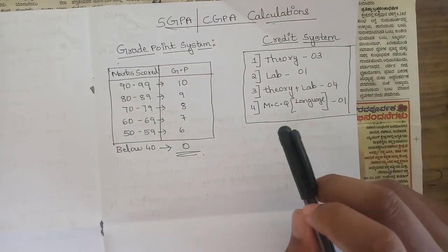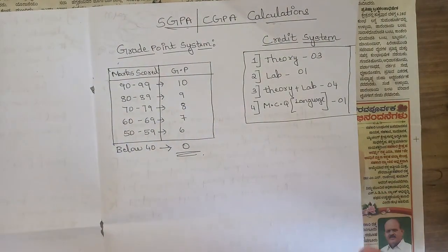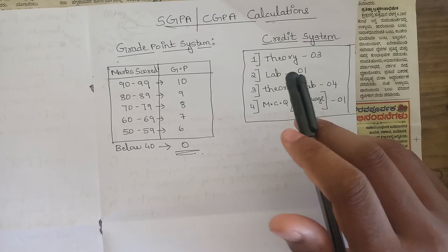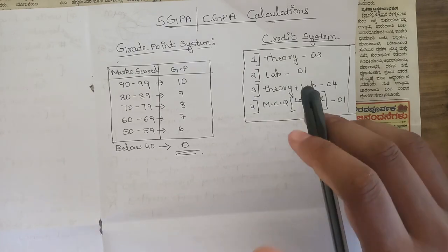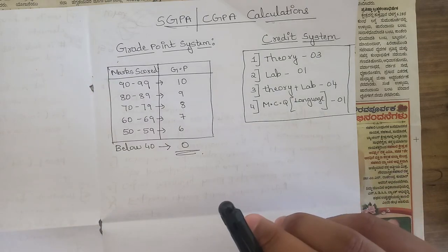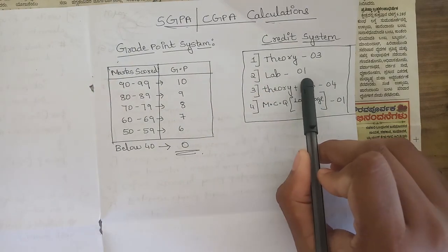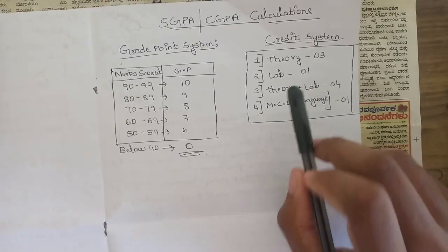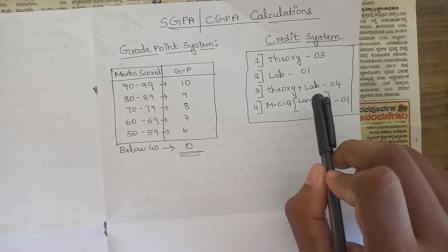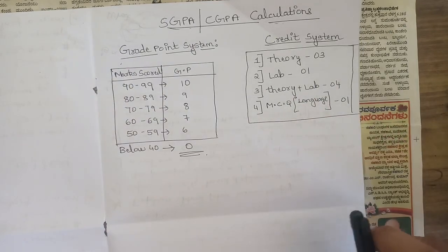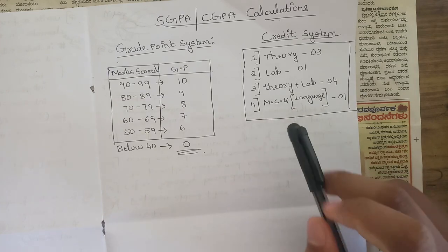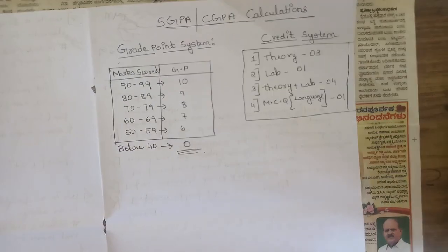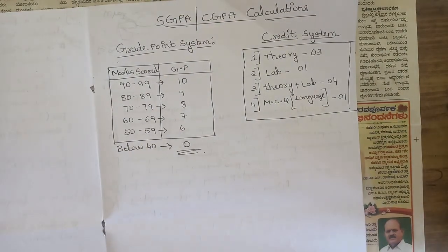Let me tell you about the credit system. For a particular subject there are a certain number of credits. For a theory subject, the credits given are 3. For a lab subject, the credit given is 1. For a subject that has both theory and lab, a total of 4 credits are given. For MCQ or language subjects such as English, Kannada, and Hindi, they have 1 credit.